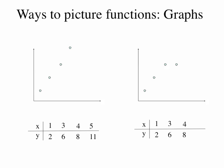We can show one of the other tables converted into a graph — an example of what the graph looks like when we put two different numbers in for x, namely 4 and 5, but got the same number out for y. Notice that on this graph we have two points at the same height; their y coordinates are the same but their x coordinates are different. Both of these are still functions.